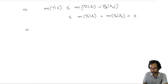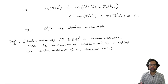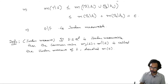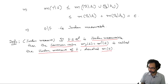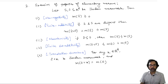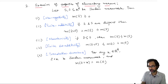This implies that the set difference E minus F is Jordan measurable. We can now state the definition of Jordan measure: given a Jordan measurable subset E of R^d, the inner Jordan measure equals the outer Jordan measure, and we call the common value the Jordan measure of E, denoted M(E).